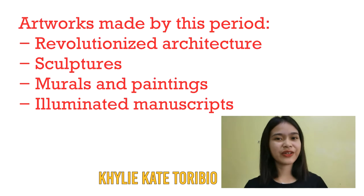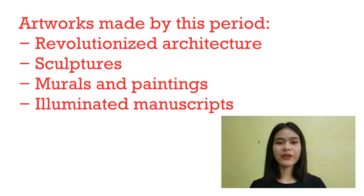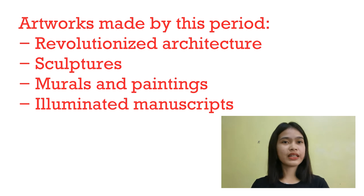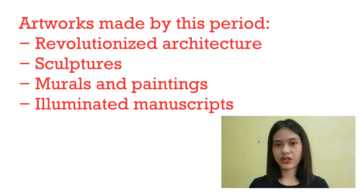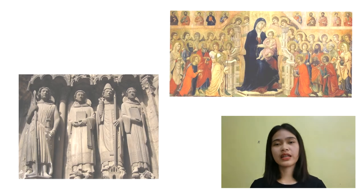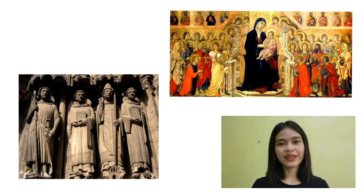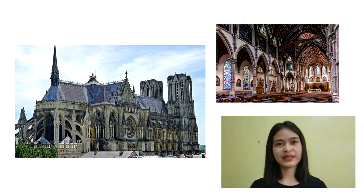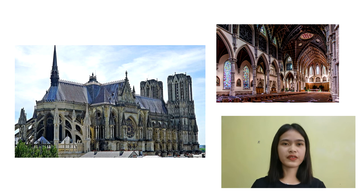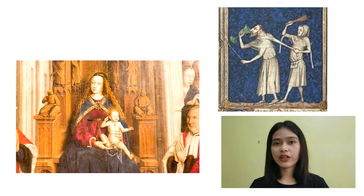Hello, my name is Kylie-Kate Ditoribio, and I'll be presenting the artworks made in the Gothic period. First, it revolutionized architecture by innovating structural designs like pointed arches, ribbed vaults, and flying buttresses. Next, sculptures evolved to be more realistic and lifelike rather than the stiff appearance of Romanesque sculptures. Murals and paintings became more lifelike and colorized. Lastly, illuminated manuscripts featured saints and included buildings and other architectural elements.